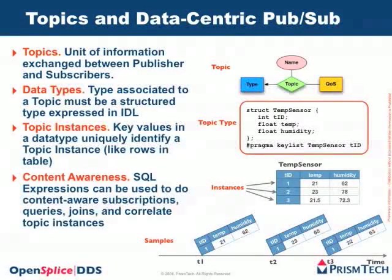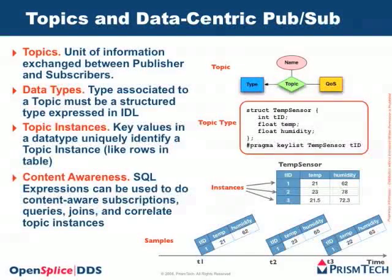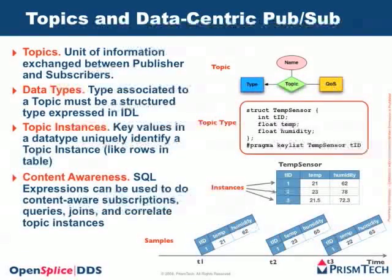Types are described by means of structures and they can have keys — keys can be as many attributes as you want. In this specific example we have a temperature sensor which has a temperature ID as an integer, a temperature as a float and a humidity as a float, and the key for this topic type is the temperature ID. Topics can be thought of as tables, more or less like tables in a database. Rows in these tables are topic instances, and an instance is identified by a specific value of a key. If you focus on a specific row and think about the value that row will assume over time, those are called samples.